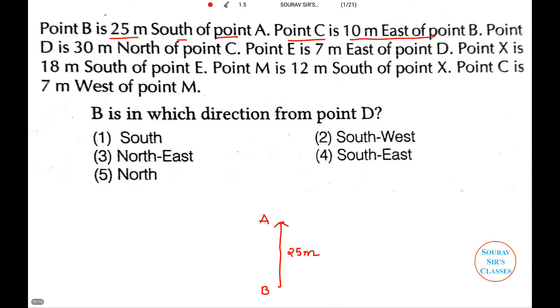Point C is 10 meters east of point B. Then they say that point D is 30 meters north of point C. So it is 30 meters north of point C. So this is point C.